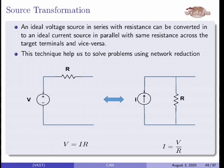So what is source transformation? It is a technique used to reduce a large network and then analyze the network as per our requirement. In source transformation, an ideal voltage source which is in series with a resistance can be converted into an ideal current source in parallel with the same resistance across the target terminals, and vice versa. That means if there is a current source and a parallel resistance, we can convert it into a voltage source in series with a resistance.